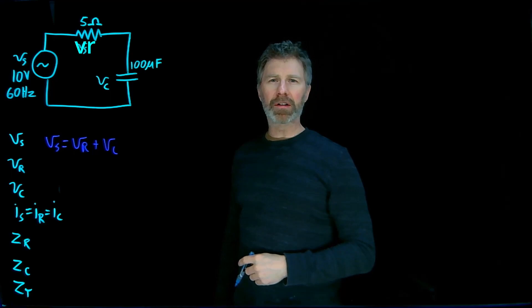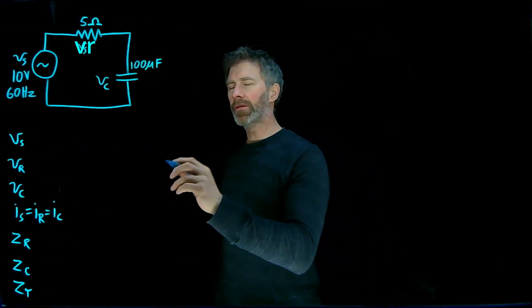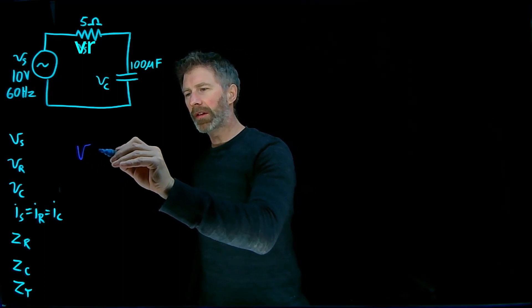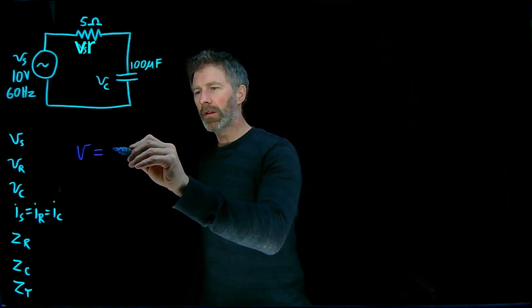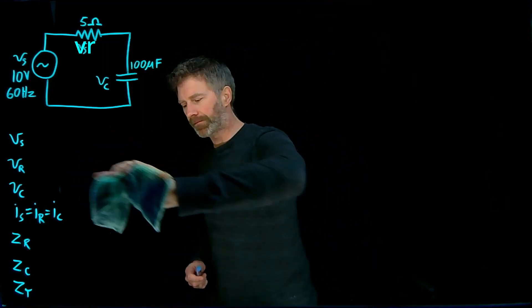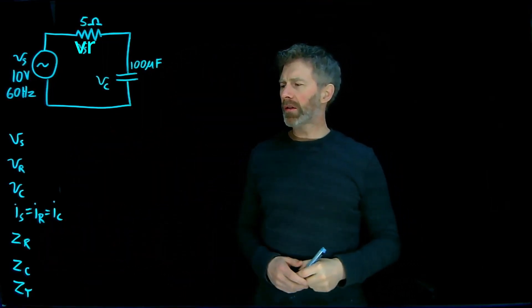There's only one path for the current to take. We'll also take advantage of the AC version of Ohm's law, which says that the voltage equals the current times the impedance. To start, let's figure out these impedances.